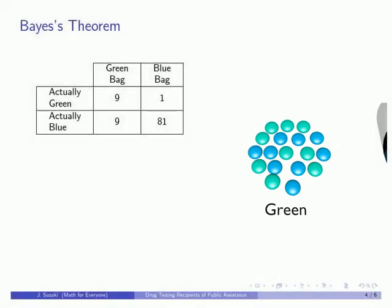So what are the implications for drug testing applicants for public assistance? Studies suggest that about 10% of the general population uses drugs on a regular basis, so they're like the green tiles in our example. Meanwhile, the specificity and sensitivity of commercial drug test kits ranges from as low as 70% to 99% or higher.